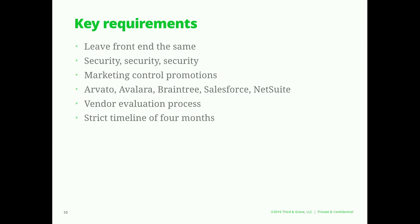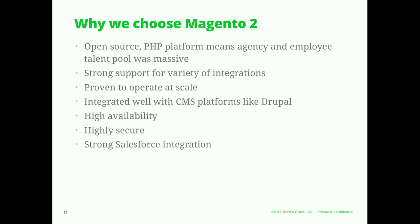The key requirements for Quicken were: leave the front-end experience the same — they were already on Drupal. Security was paramount; Quicken can't have a security issue because their product connects to your bank. A story in the New York Times about a compromise would have a material impact on their brand, which is their entire business. Marketing wanted more control over promotions. They needed to integrate with systems like Arvato, Braintree, Avalara, Salesforce, and NetSuite. And they had a crazy timeline of four months to move this nine-figure store online.